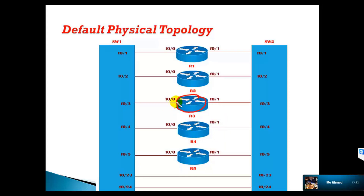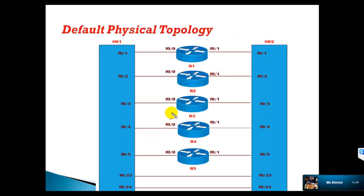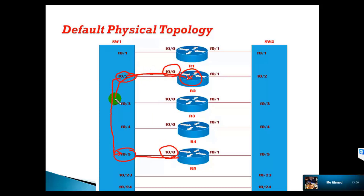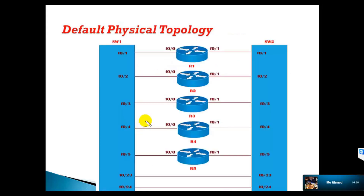So let us see how. Router 2 is connecting to switch 1. The first thing we need to analyze is what kind of port is being used. Router 2 F0/0 is connecting to F0/0 — meaning on both ends I am using F0/0. Router 2 connects to switch 1 on port F0/2, and from there on the same switch it connects to port number F0/5, which again connects to router 5's F0/0. So router 2 has a connection to router 5 via the layer 2 switch — that is the default physical connection.